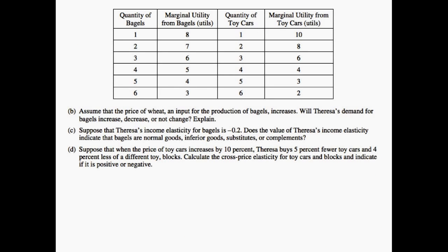Moving on to part B, we're asked about how the price of wheat, an input for the production of bagels, increases and how that influences Teresa's demand. In this case the price of wheat is an influencer of supply since it's an input and therefore we'll see a change in supply but we will not see a change in demand. That makes sense because the change in price of wheat is going to be an influencer for the producer of bagels but it doesn't influence the consumer's demand for those bagels. Therefore there would be no change in Teresa's demand for bagels.